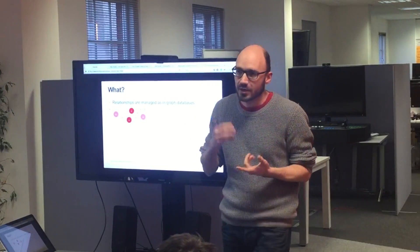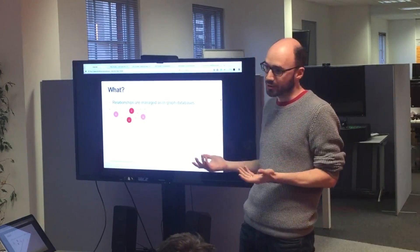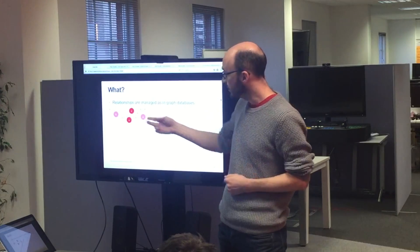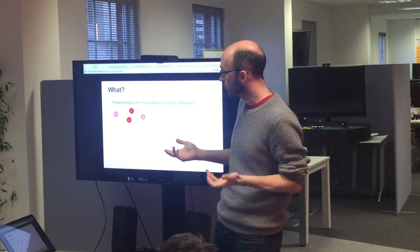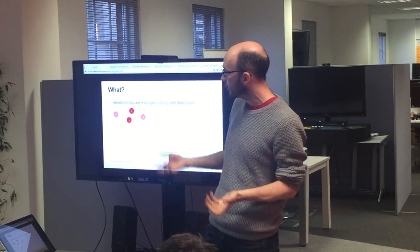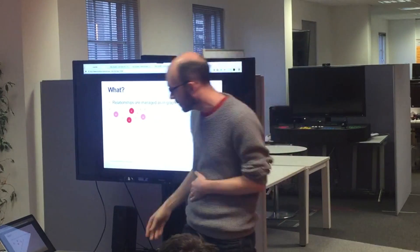The example I'm going to go through — because we're a publishing company — we're going to have users who visit articles. So that's pretty simple: users and articles are vertices, and visits are edges.